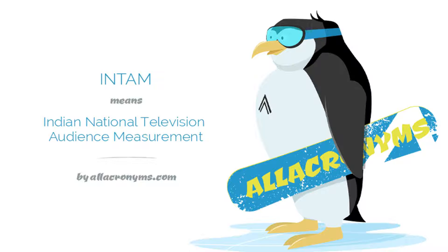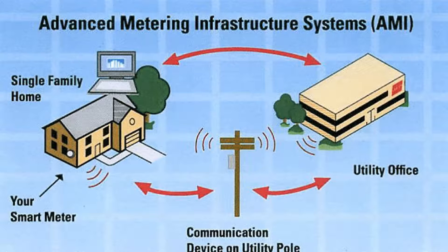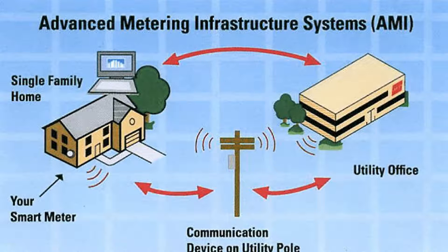INTAM uses two ways to measure TRP. The first one is Frequency Monitoring. In this method, people meters are installed in homes and these gadgets record data about the channel watched by family members. These equipments are costly and are imported from abroad. It reads the frequency of channels and decodes it into channel name, and the agency prepares a report on that basis. But there is a drawback in this method because the frequency is changed by cable operator before sending signals to homes.